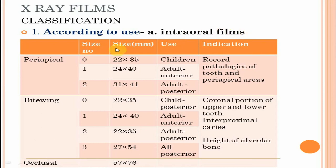There are three types of intraoral films: periapical films, bite-wing films, and occlusal films. Based on size, periapical films have three types: Size 0 is 22 x 35 mm used in children, Size 1 is 24 x 40 mm for adult anterior region, Size 2 is 31 x 41 mm for adult posterior region. Bite-wing radiographs have four sizes: Size 0 is 22 x 35 mm for child posterior, Size 1 is 24 x 40 mm for adult anterior, Size 2 is 22 x 35 mm for adult posterior, Size 3 is 27 x 54 mm for all posterior. The occlusal radiograph comes in size 57 x 76 mm.